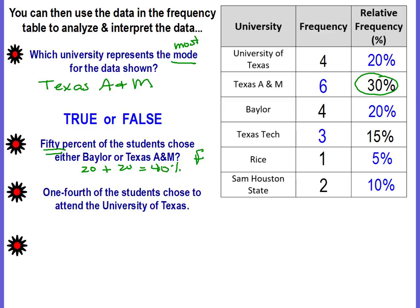Statement: one-fourth of the students chose to attend the University of Texas. University of Texas is 20 percent. Percent is always out of 100, so 20 out of 100. We can simplify — both end in zero, so cross them out — giving two out of ten. Dividing both by two gives one-fifth. One-fifth is not equal to one-fourth, so this is also false.